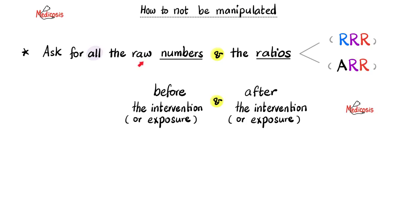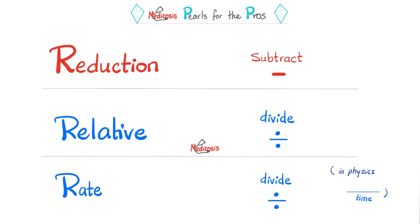To stop being manipulated, ask for all the raw numbers before and after a certain intervention or exposure, and ask for all the ratios — not just in relative terms, but in absolute terms as well. Please note: when we say 'reduction,' we subtract. So absolute risk reduction involves subtraction. When we say 'relative,' it implies division. When we say 'rate,' it also implies division.